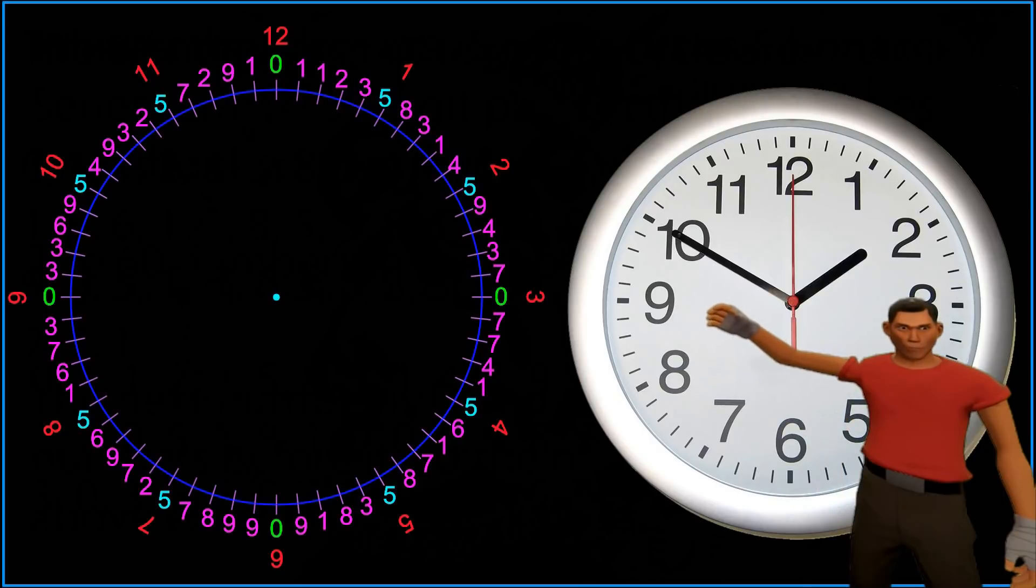As you can see here, the zeros and the fives conform perfectly with the 12 hour marks on a standard analog clock. But that is only the tip of the iceberg.